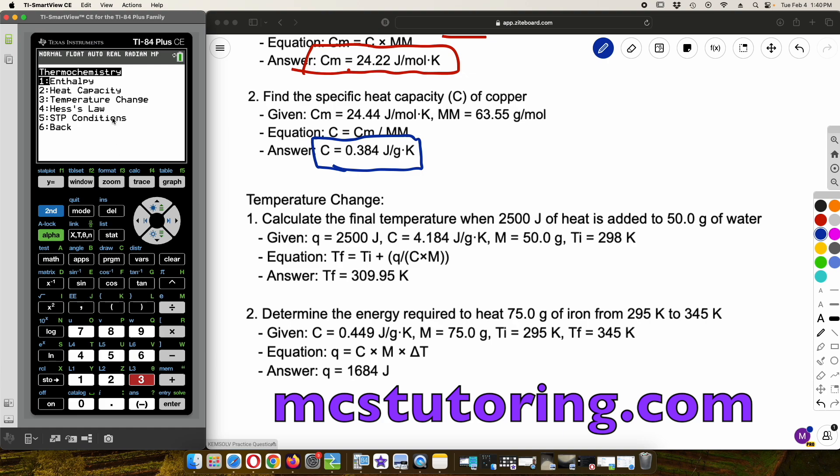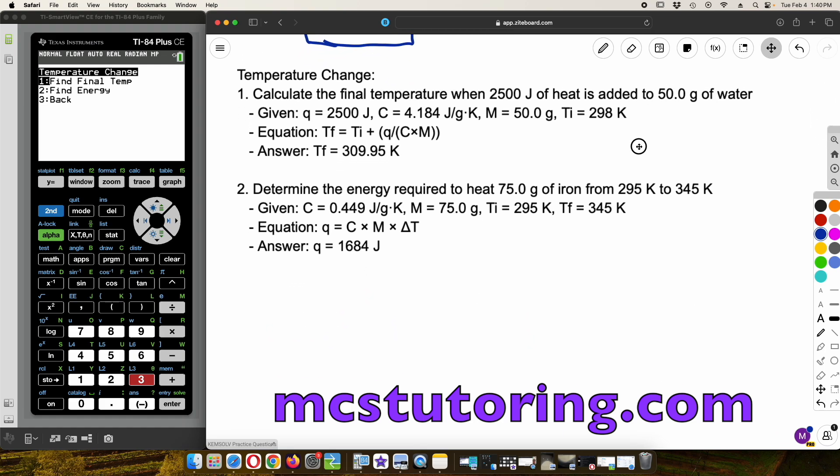Let's go on. We're going to go back here to the general topic of thermochemistry. And we're going to go to temperature change, option three here. So we're going to find final temp or find the energy. So here, calculate the final temp when 2,500 joules of heat is added to 50 grams of water. So the given Q is 2,500 joules. That's the heat added. And then C, that's the specific heat of water. So that you might have to look up on a list of givens, like specific heat of water, iron. It gives usually the specific heats of basic elements and compounds and whatnot. Okay.